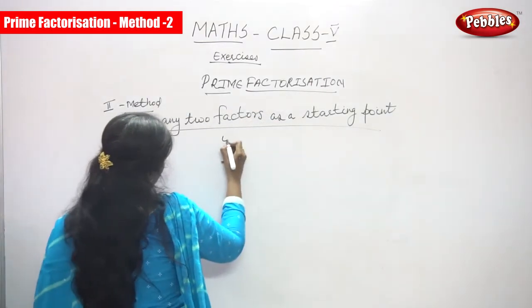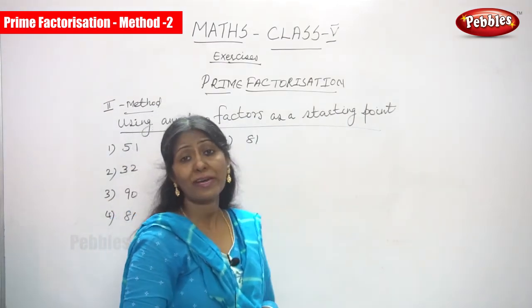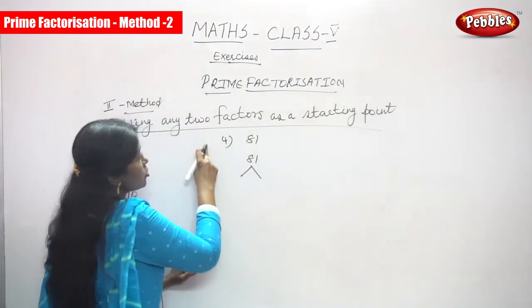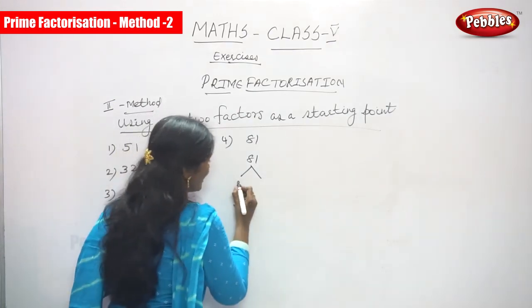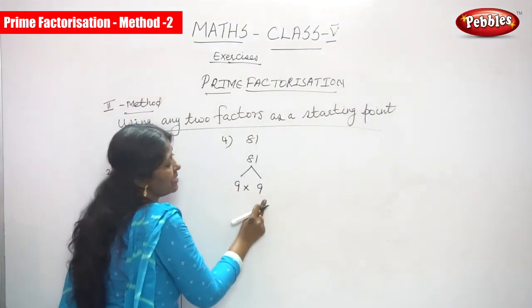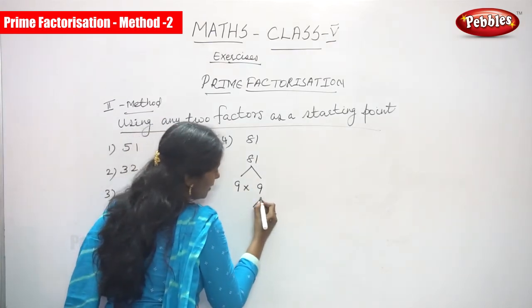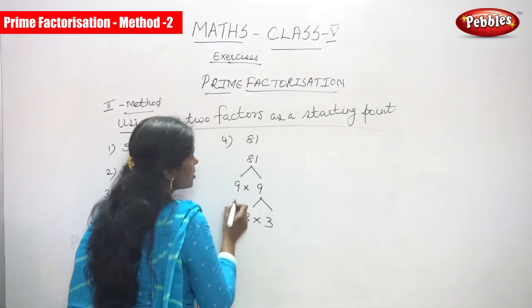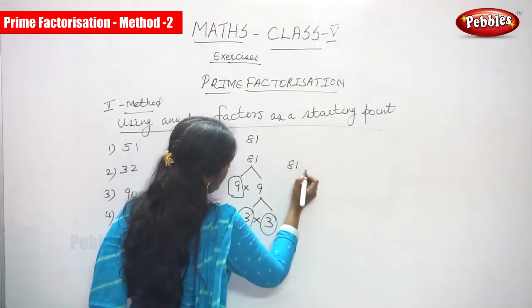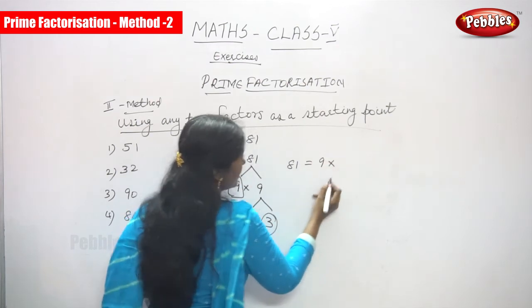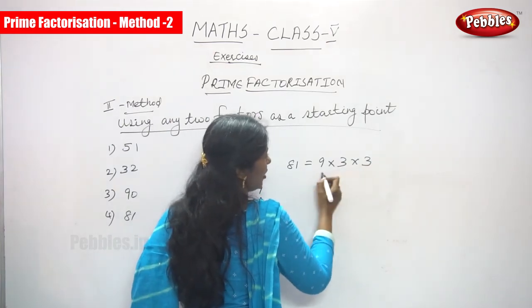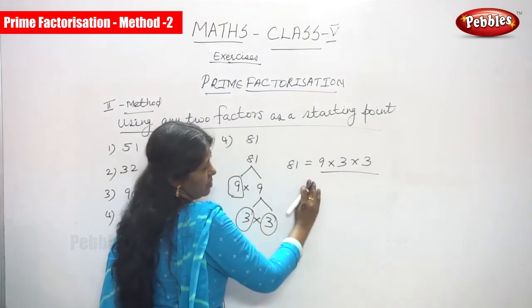The next question is 81. Using any two factors, I have taken 9 into 9, since 9 into 9 equals 81, or 81 divided by 9 gives 9. Now 9 can be written as 3 into 3. So 81 becomes 9 into 3 into 3, giving us 9 threes are 27, and 27 into 3 is 81.